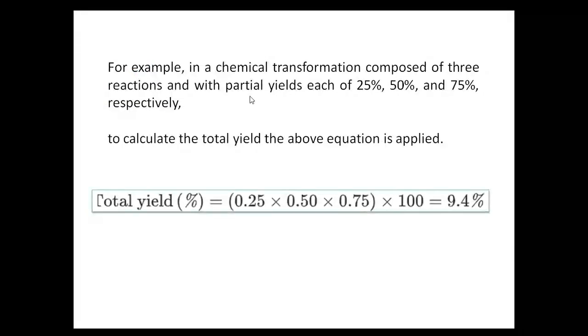For example, in a chemical transformation composed of three reactions with partial yields of 25%, 50%, and 75% respectively, to calculate the total yield the above equation is applied.